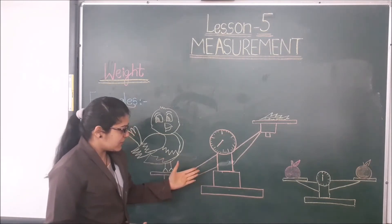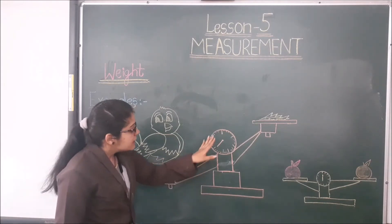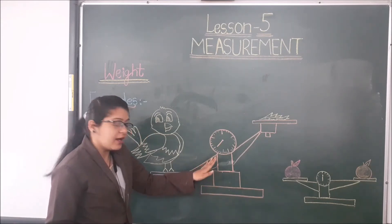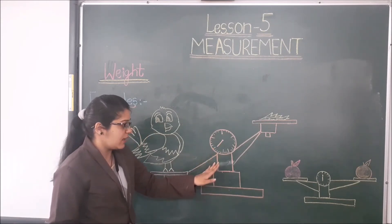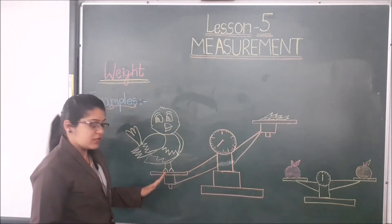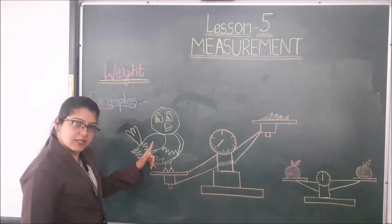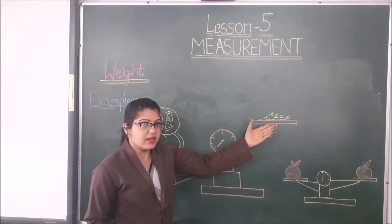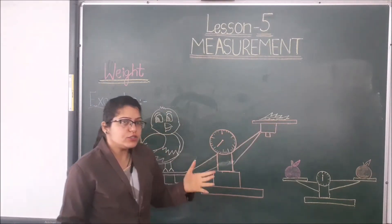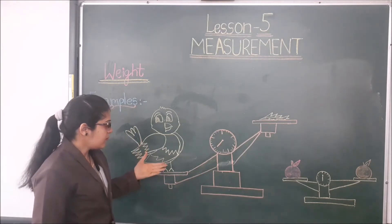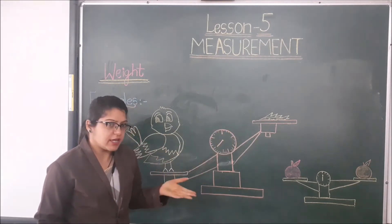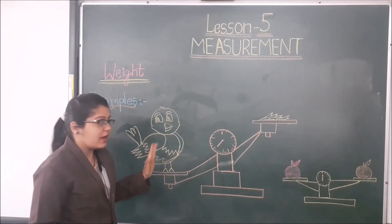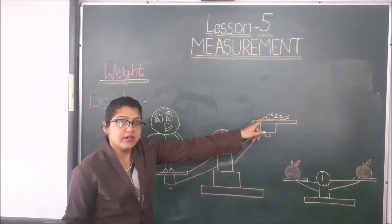This is a measuring scale. At one side of the measuring scale there is a bird, and on that side one feather is there. Now tell me which one is heavy — a bird or a feather? The bird is heavy and the feather is light.